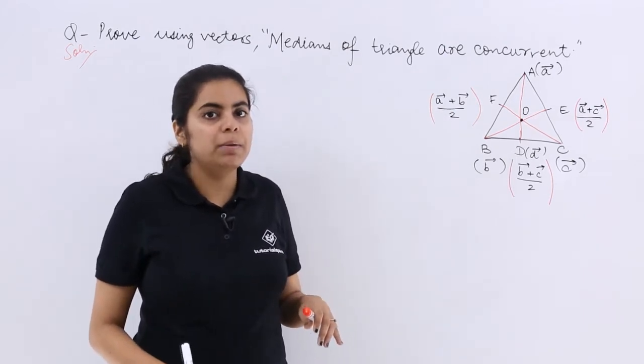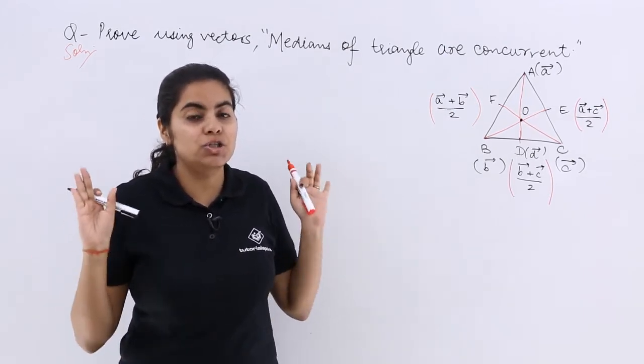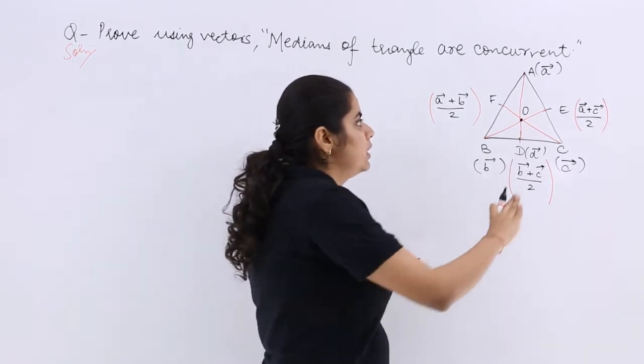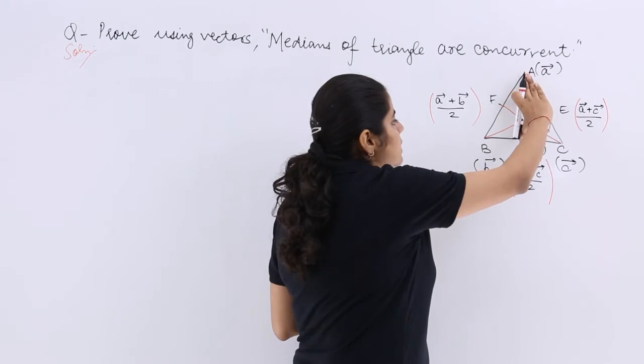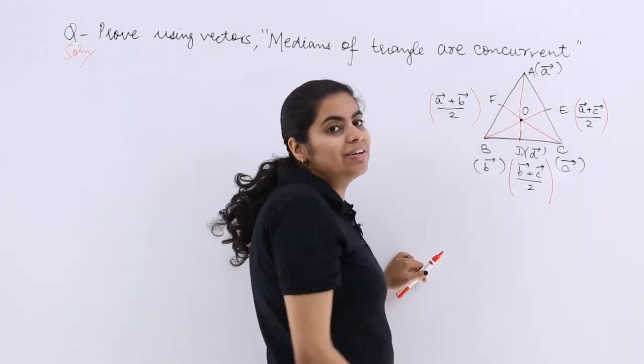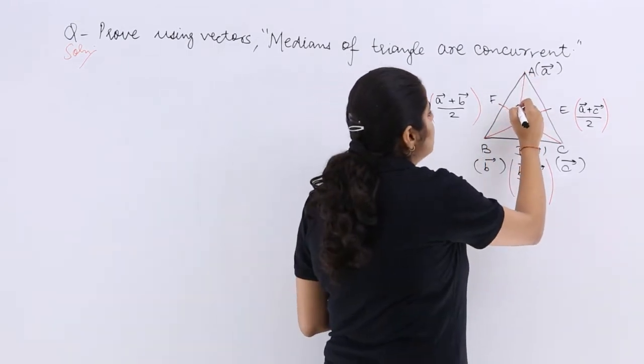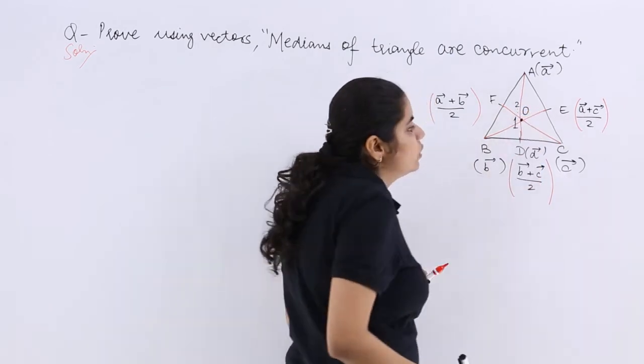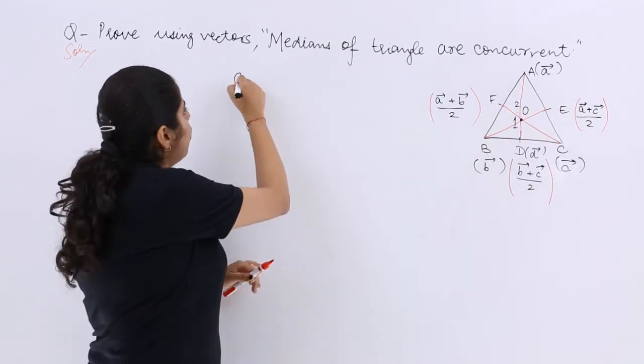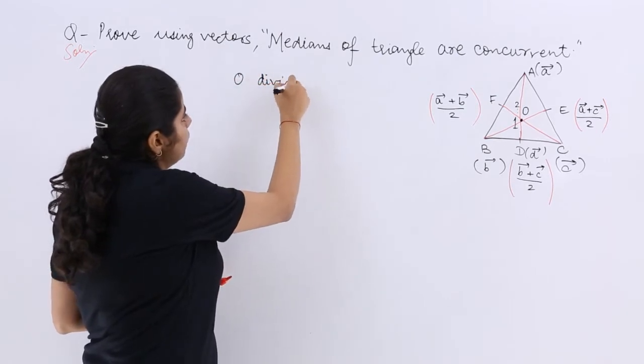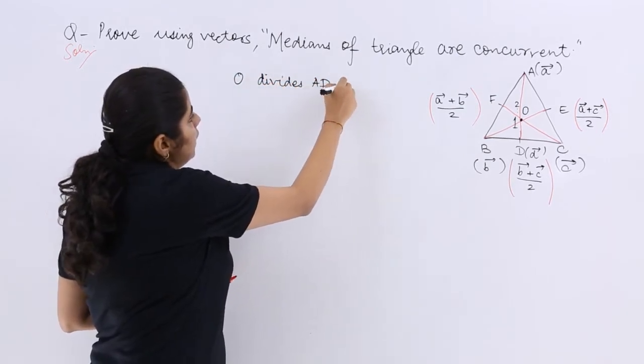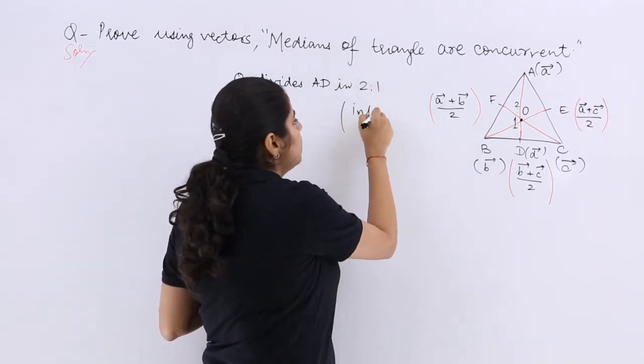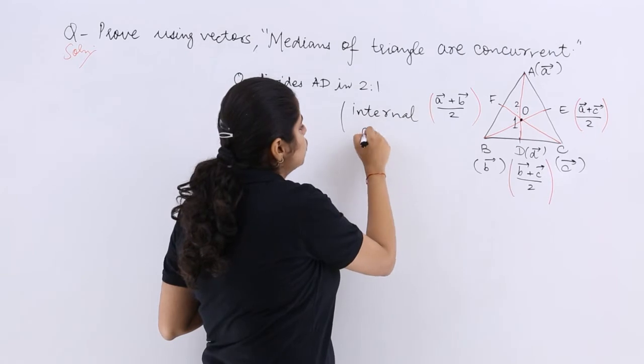Now one more thing: till now nothing has been established related to concurrency. I know a property in case of median that here it is AD, and O will divide AD in the ratio 2 is to 1. Don't we know that? Yes, we know that. So I will write: O divides AD in 2 is to 1 ratio, and that is internal division. Let me mention internal division.